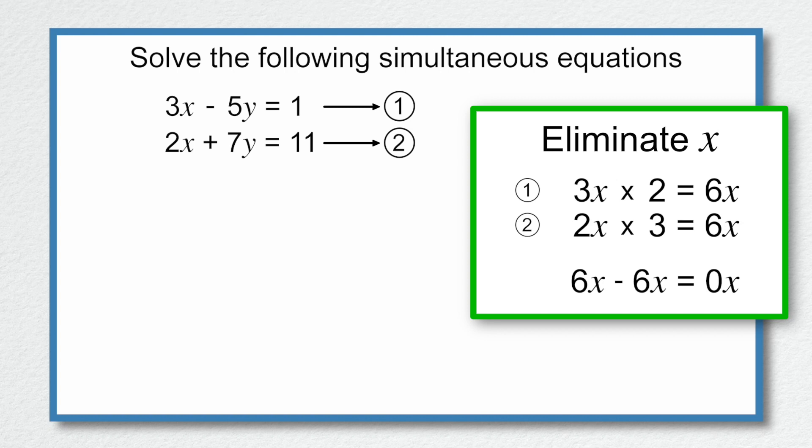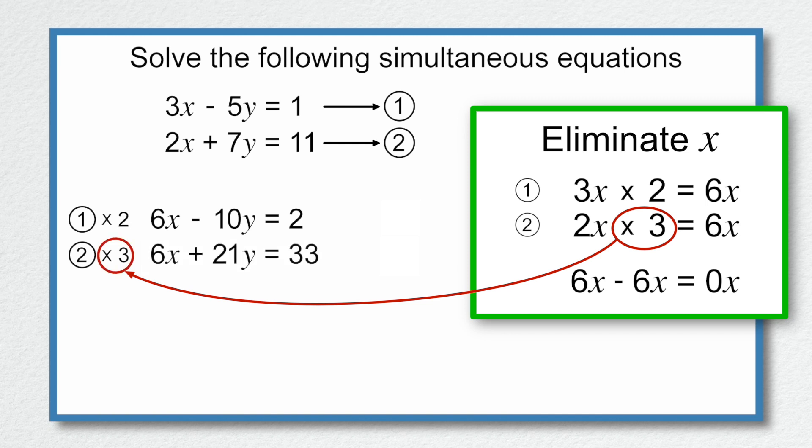Watch carefully what I do. I'm going to multiply equation 1 by 2 to get my 6x. So that's 6x subtract 10y is equal to 2. I'm now going to multiply equation 2 by 3 to get my 6x. So that's 6x add 21y is equal to 33.